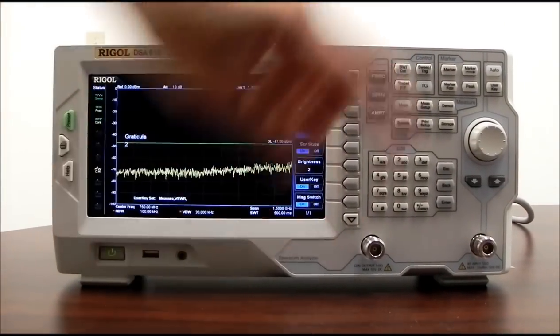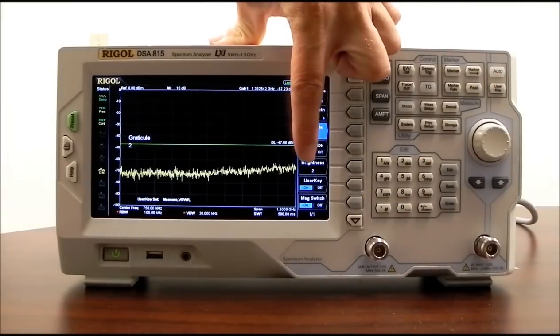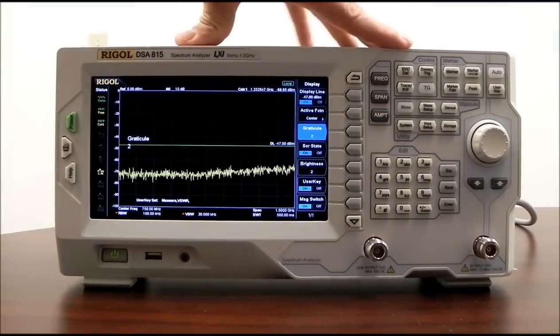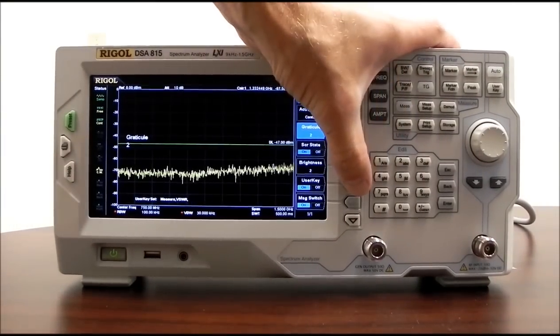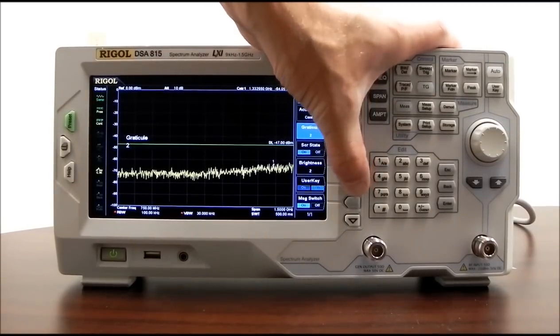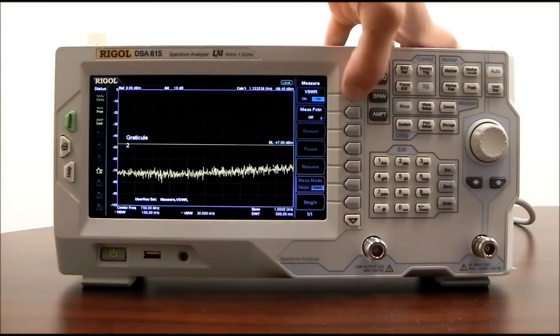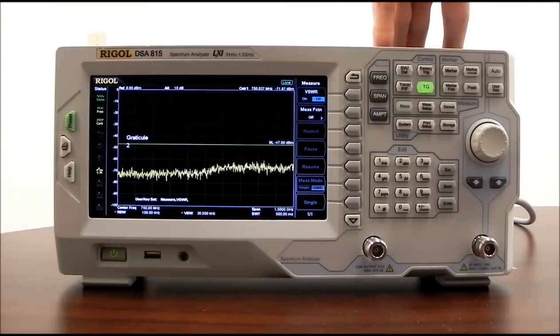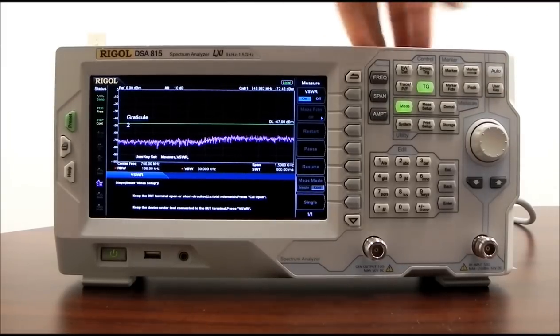We can enable the user key. User key is over on the right-hand side. Basically, when you enable the user key, you can set it to go into an area as a quick jump to that menu. So if we disable the user key, now let's enable the user key, and let's go to measure, and we'll enable VSWR, and we'll press the user key on. And so now you'll see that if we press the user key, we'll go back to the VSWR.